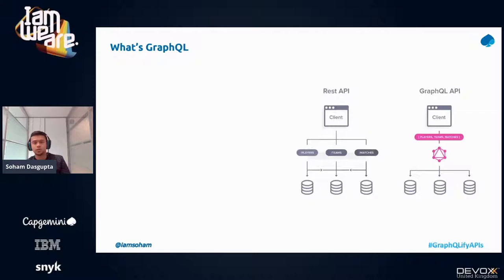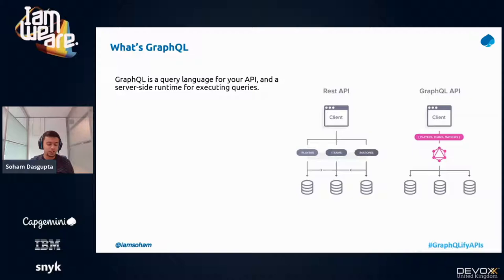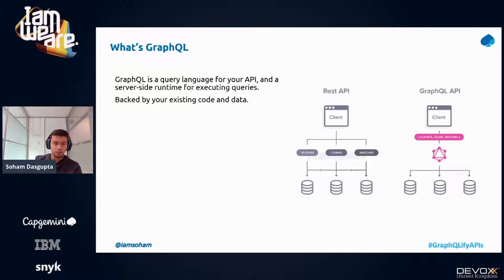When you have a relational database or hierarchical data, it's not always needed for your client to get everything that is exposed. GraphQL gives you the opportunity to control that. It's a language for your API, for executing queries — you think of it as querying your data, just like you do in a normal database. It can be backed by your existing code and data, so whatever infrastructure code you wrote for REST APIs, you can reuse it. That's the beauty of GraphQL.